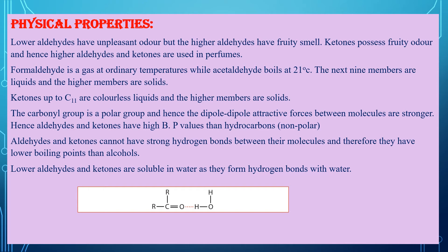Next point: lower aldehydes and ketones are soluble in water. They are soluble because they can form hydrogen bonds with water. For example, a ketone R-C(=O)-R can form a hydrogen bond with a water molecule, and similarly for aldehyde R-CHO with water. As they form hydrogen bonds with water, lower aldehydes and ketones are soluble in water.